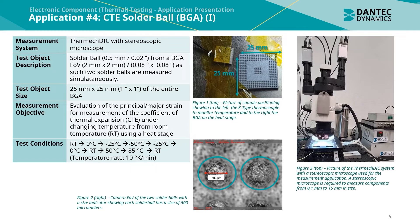Application 4 was a CTE measurement of a solder ball within a ball grid array. The measurement system used was a thermic DIC system together with a stereoscopic microscope. The solder ball itself was 0.5mm in diameter and the ball grid array was 25 by 25mm. The measurement objective was to evaluate the principal or major strain for CTE measurement under changing temperature using a heat stage. The temperature cycle went from room temperature down to minus 150 degrees Celsius, back to room temperature, then up to 85 degrees Celsius and back to room temperature.